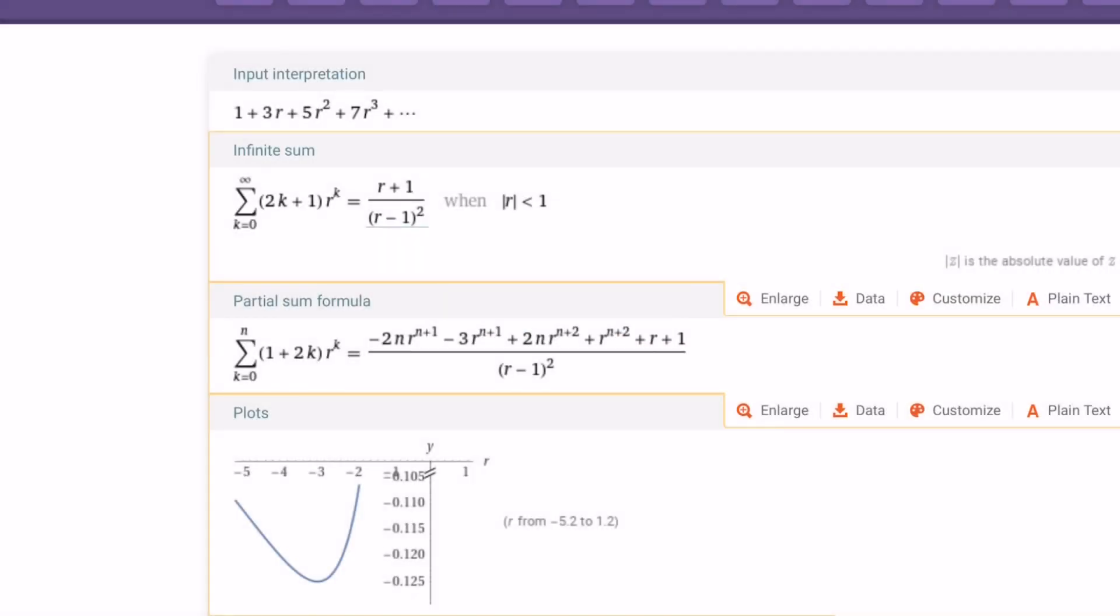This is what Wolfram Alpha gives us, which is kind of interesting. Look at this. We have the 2k plus 1 multiplied by r to the k. As you can see, our sum appears here. The partial sum formula, unfortunately, is not very friendly. But one thing that's cool about it: the sum is r plus 1 divided by r minus 1 squared.